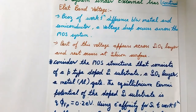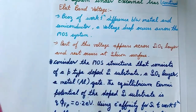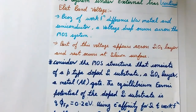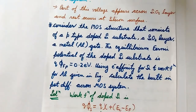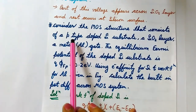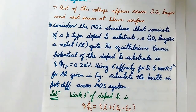To have a clear understanding of flat band voltage: the term means the voltage required to make the energy bands flat. With the help of a numerical example we will see this term very clearly. The problem states: consider a MOS structure consisting of a p-type doped silicon substrate, one SiO2 layer in the middle, and a metal aluminum gate.